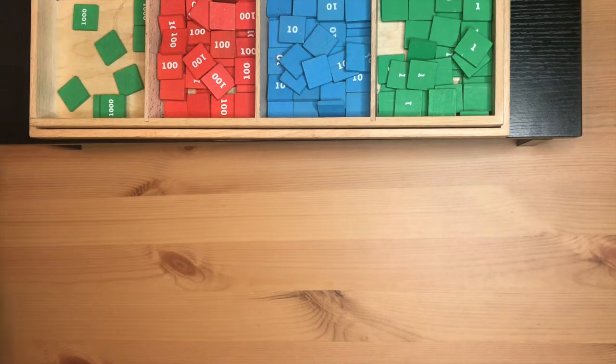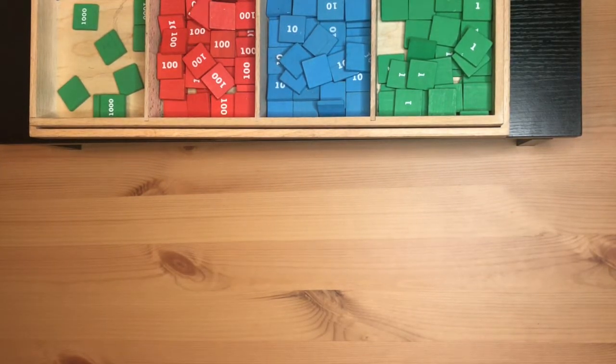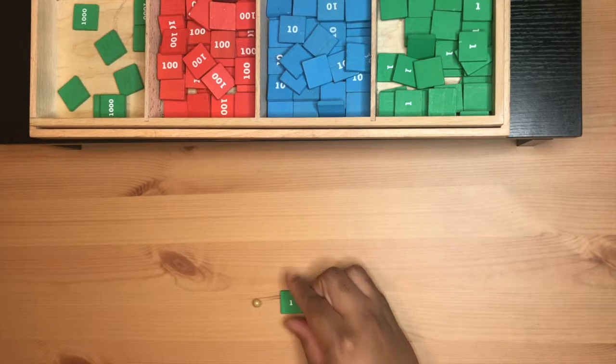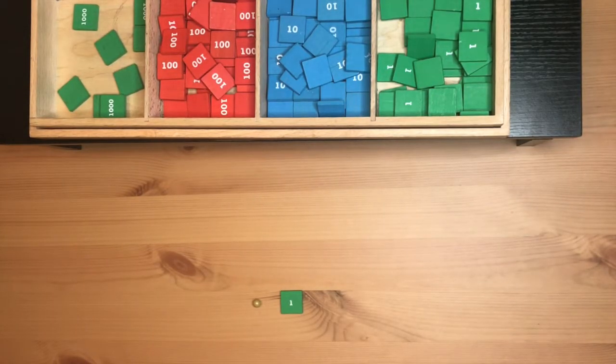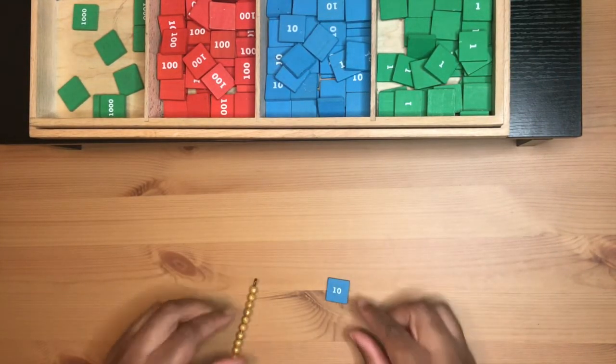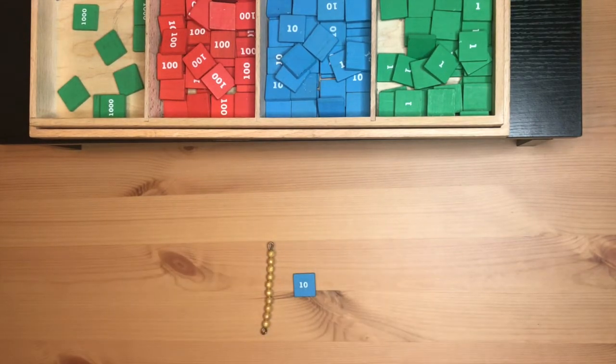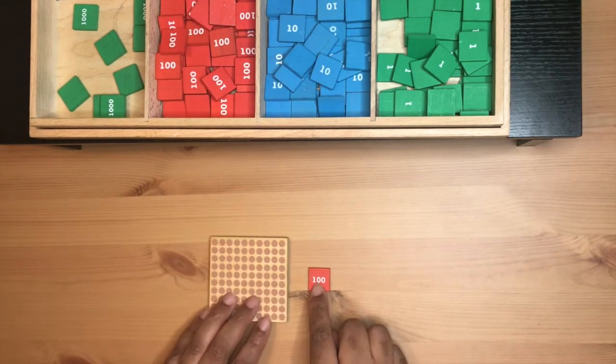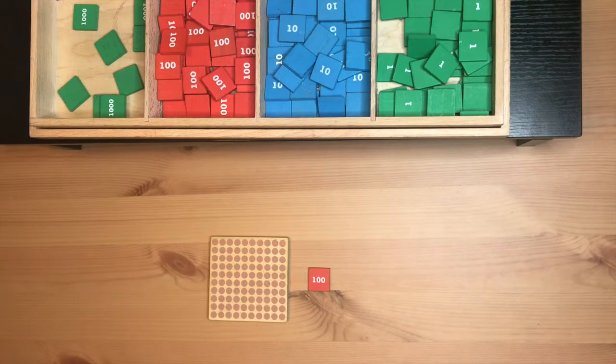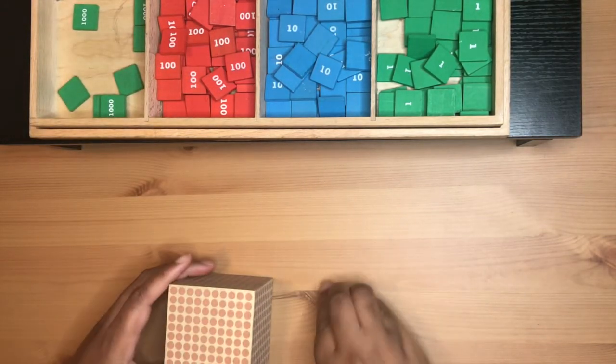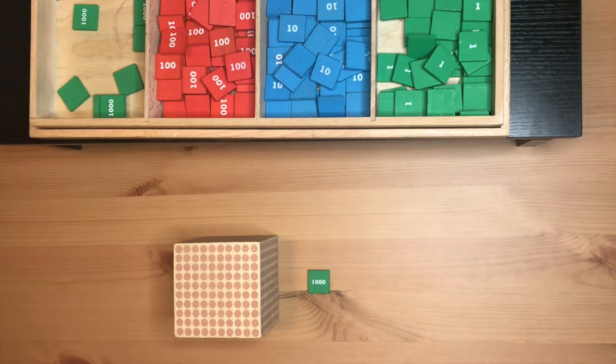We're going to put the paper to the side and do a little bit of an overview. Here I have one unit, one unit, they both mean the same thing. One unit, one ten, one ten, they mean the same. Here we both have 100, 100 in the stem and 100 square. One thousand, one thousand.